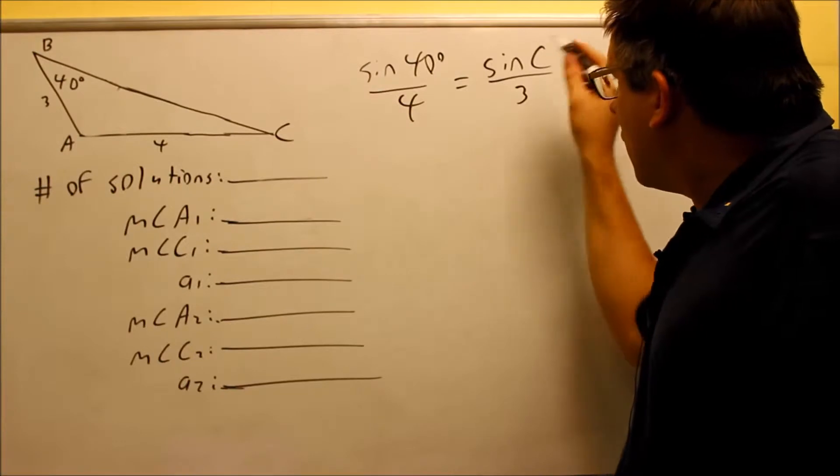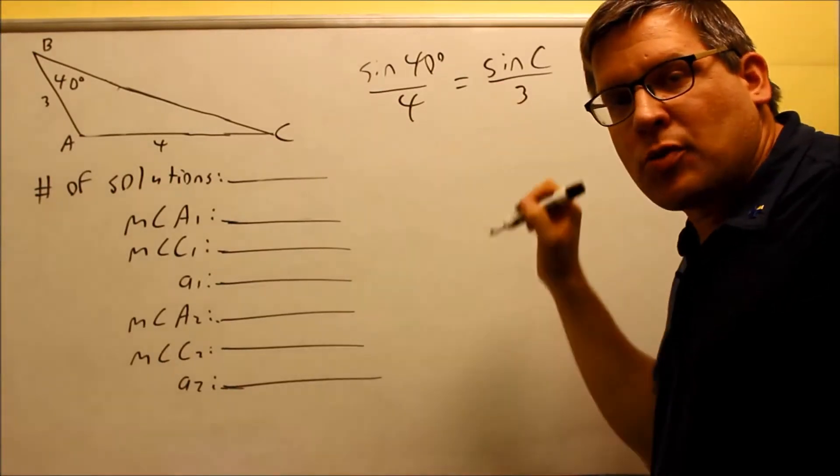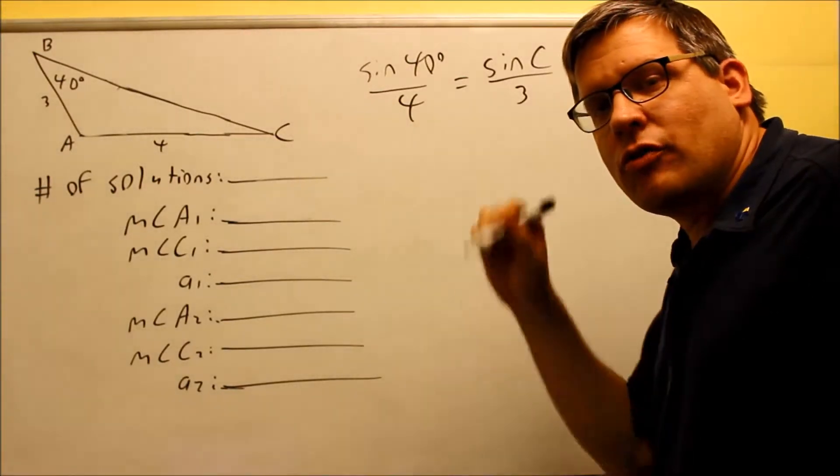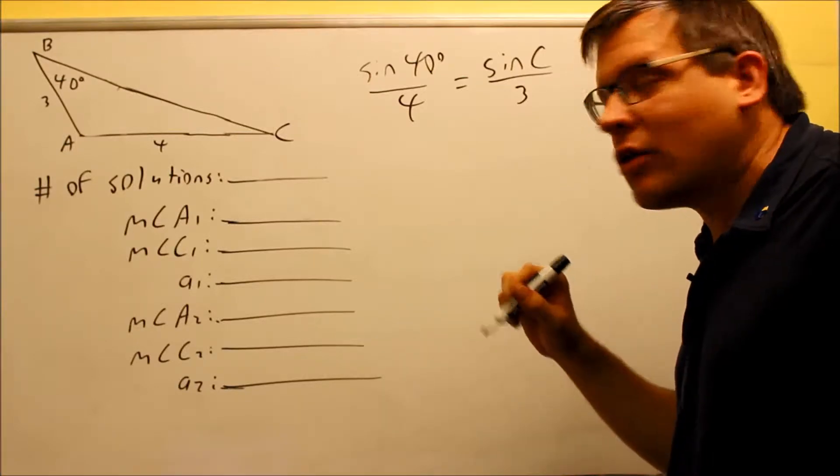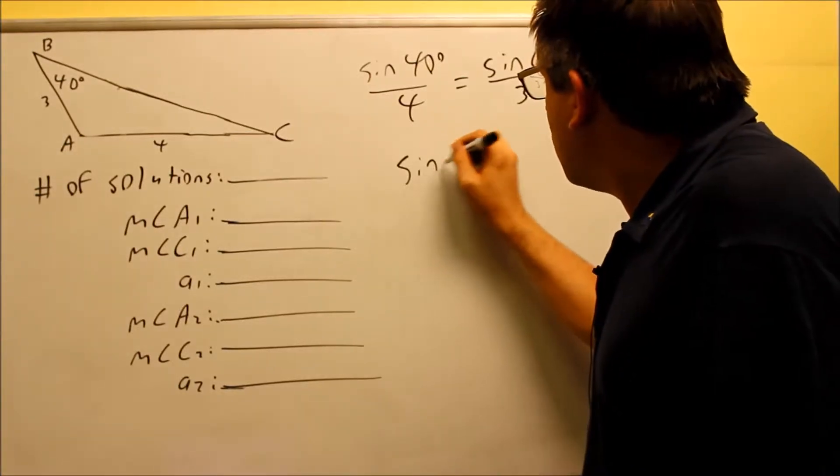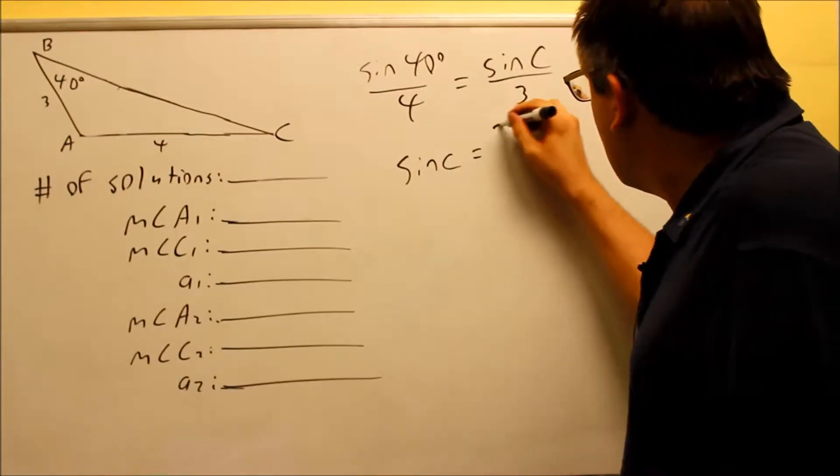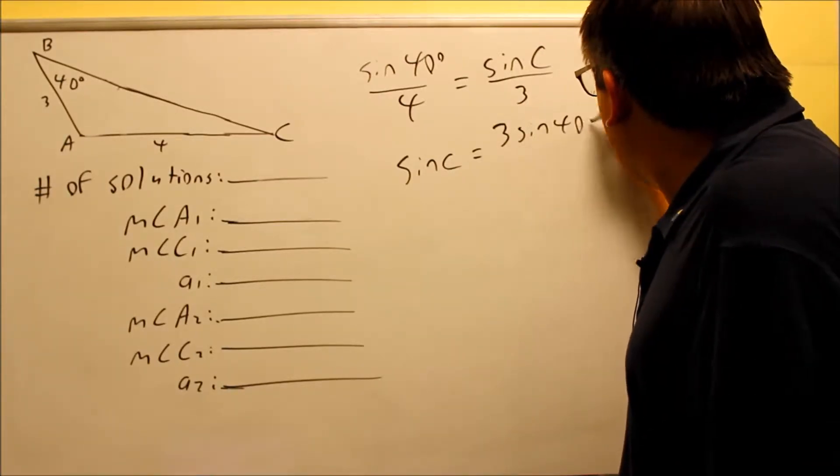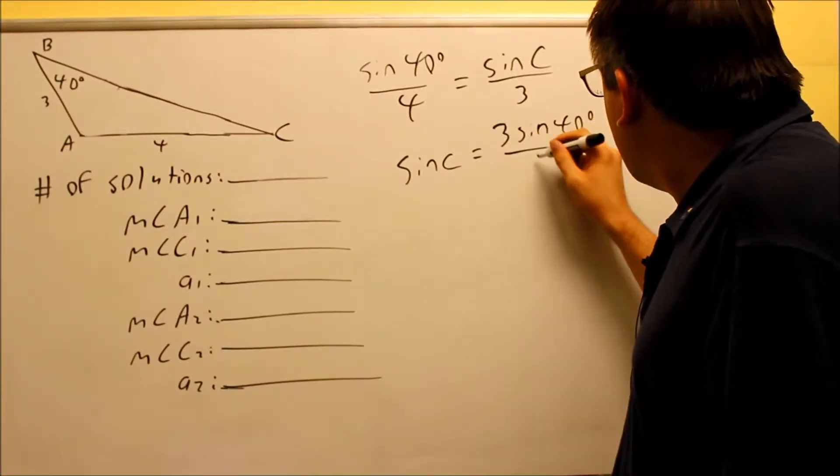We're going to cross-multiply. And in the previous video, I showed how to cross-multiply. But for the sake of this video and the future ones, I'm just going to go ahead and tell you what sine C is equal to by solving for it directly. So sine C is going to be 3 sine 40 over 4.